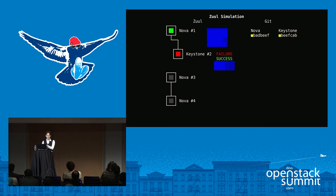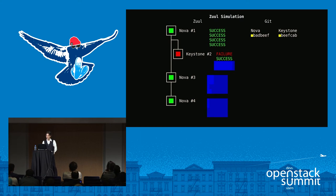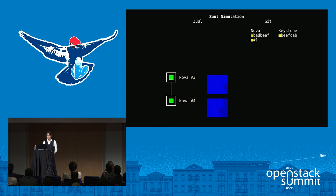Zuul moves the Keystone change off to the side to keep running jobs so it can report back as much information as possible to a developer. Then Zuul reparents changes three and four on top of change number one and restarts their jobs, so they're now running only with changes that could possibly land ahead of them. Those jobs continue; the jobs for the first change finish, succeed, and we merge number one into the Nova Git repository. The rest of the Keystone jobs finish, and we report back that the Keystone change failed. Changes three and four finish up and merge.